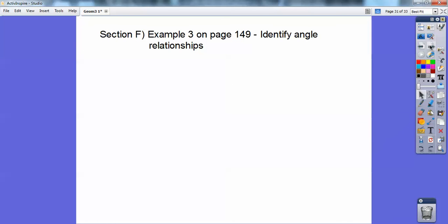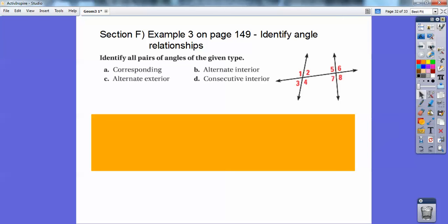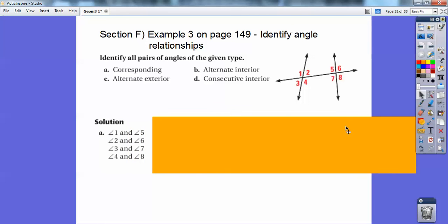So identify all angle relationships. Identify all the corresponding angles over here. Remember, corresponding angles are if I squish these two lines together, one would go right on top of five. So one and five are corresponding. Two would slide right over on six, so they're corresponding. Three and seven, four and eight. Those are all my corresponding angles.